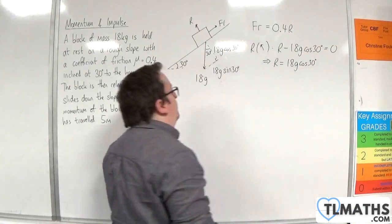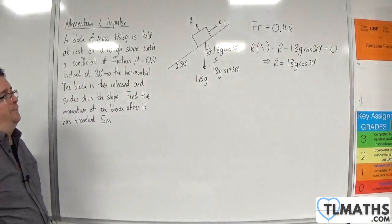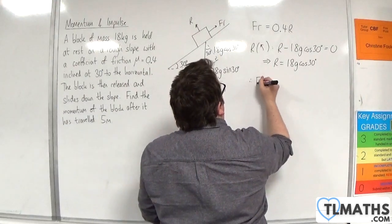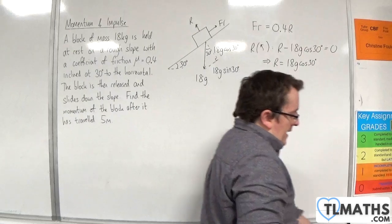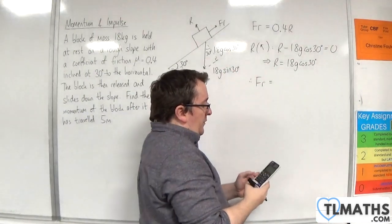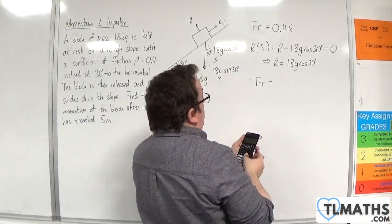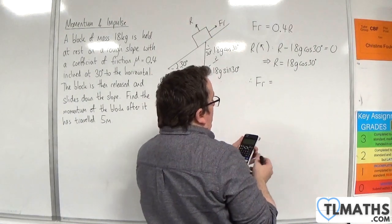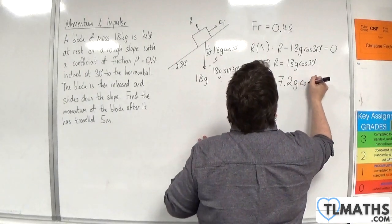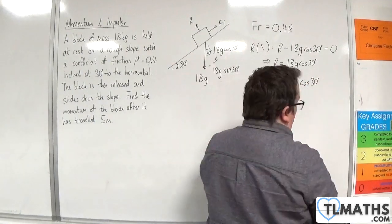Now I could evaluate that at this point. I'm going to leave it as it is. So therefore the friction is going to be equal to 0.4 times that. So that is, well 0.4 times 18 is 36 over 5, so 7.2g cos 30. So that's my friction.